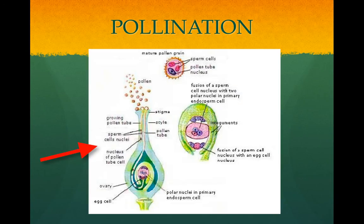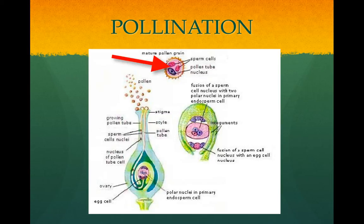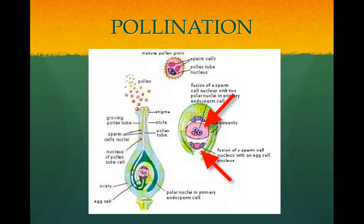Pollination is the delivery of pollen to the stigma of the carpel, and this occurs through wind or animals. The pollen grain develops on the stigma. The tube cell grows into the pollen tube, which goes down to the ovary. At the same time, the generative cell forms two sperm via mitosis. The pollen tube penetrates the embryo sac and releases two sperm. One sperm fertilizes the egg, which becomes the zygote and then the embryo, and the other sperm joins the central cell in the embryo sac, creating a 3N nucleus which forms tissue that nourishes the embryo. This is called the endosperm, and this process is double fertilization.